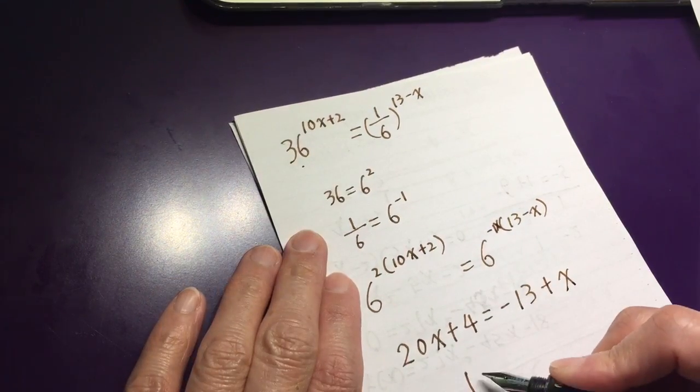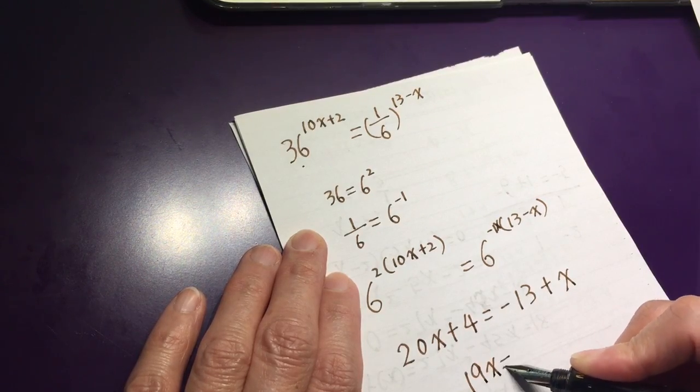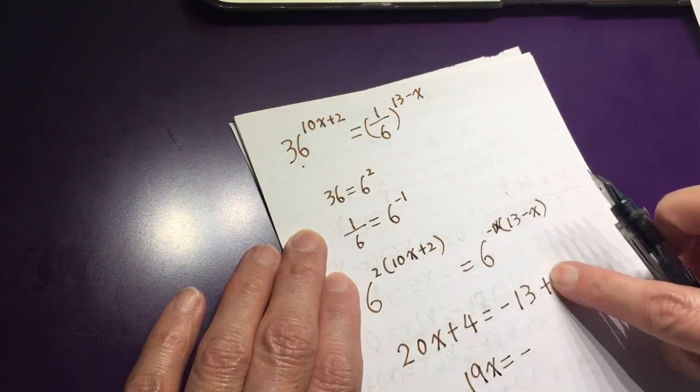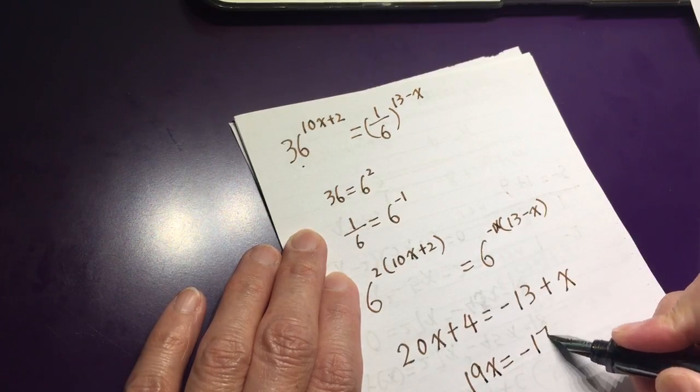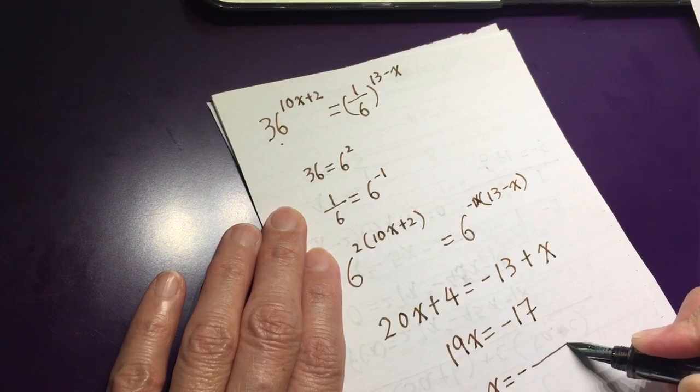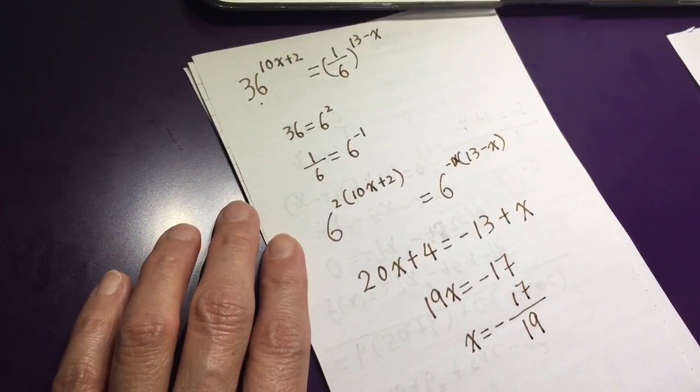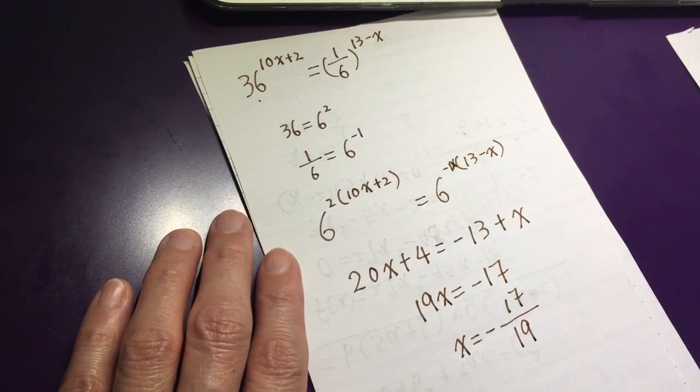Move x around, 19x equals negative, move 4 to this side, negative 17. x equals negative 17 over 19, make sense? Now we are done.